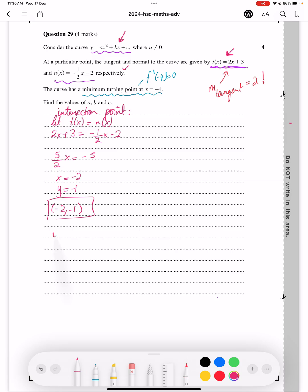Now, we know that y dash equals 2ax plus b. We know that the tangent equation is in y equals mx plus b form, so that would mean the tangent is 2 at the point that we've just found. So that would mean that y dash at x equals minus 2 equals 2.